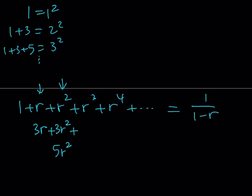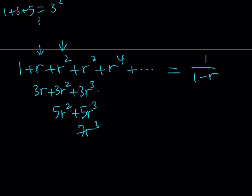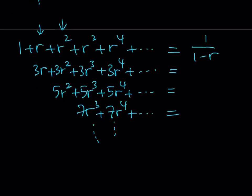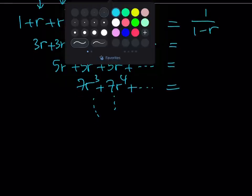Now let's continue. I want to get 16r cubed. To get 16r cubed I should be adding 3r cubed, then 5r cubed, but that's not enough — I also need 7r cubed. So this tells us that we're going to be stacking up all these series with different odd number coefficients and adding them up. This is going to go on forever, and at the end we're going to add all those expressions. So that's what I have on the left hand side. But how do I find each of these sums?